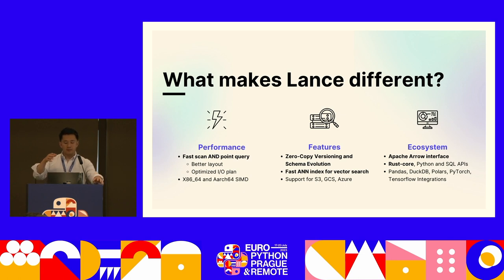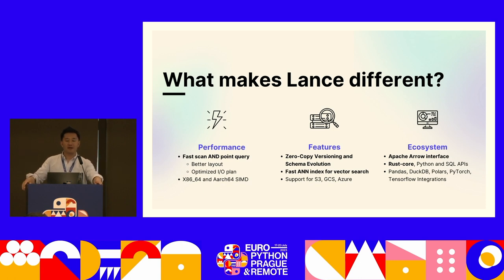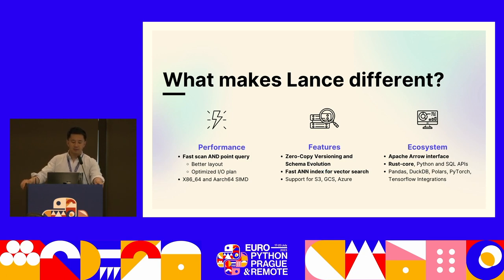We call it zero copy because when you add columns or rows, you don't have to create a snapshot and copy the data. For tabular data this is annoying but not a deal breaker. But if you have a petabyte of images and add a column, you don't want two datasets that are each a petabyte. Fast point queries give us the ability to add rich indexing — that's how we're able to build a vector database effectively on top of this storage layer. Of course, Lance supports all of your cloud storage.